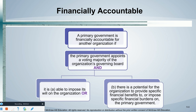Looking at the two boxes on the bottom of the decision tree: the primary government is able to impose its will on the organization — meaning if the primary government wants something done, it gets done. Or there is a potential for the organization to provide specific benefits to or impose specific burdens on the primary government. For example, if the primary government cosigns some debt for the other organization, that cosigning of debt is a burden. We go through this decision tree to decide if we have a component unit.